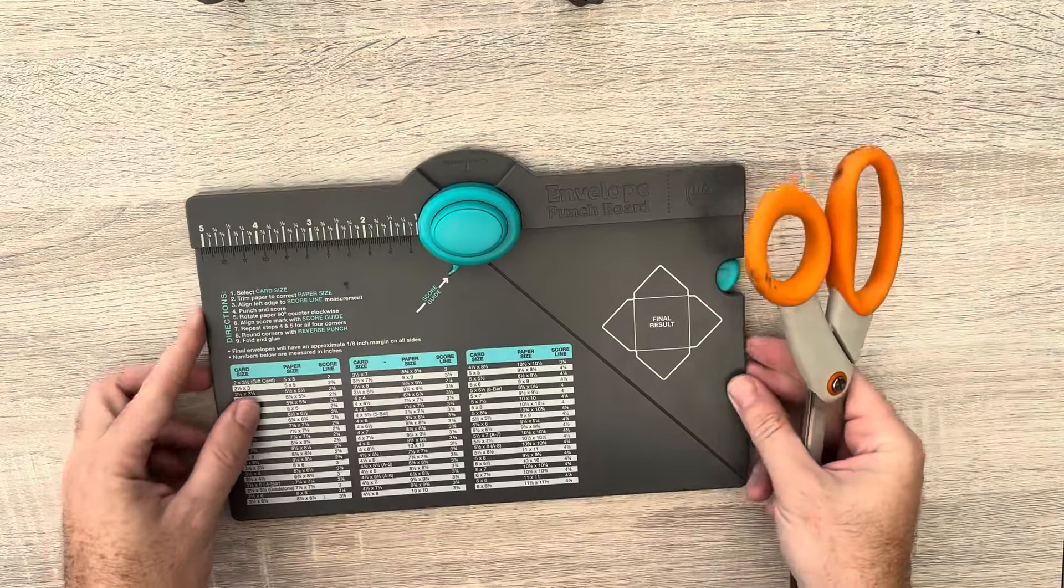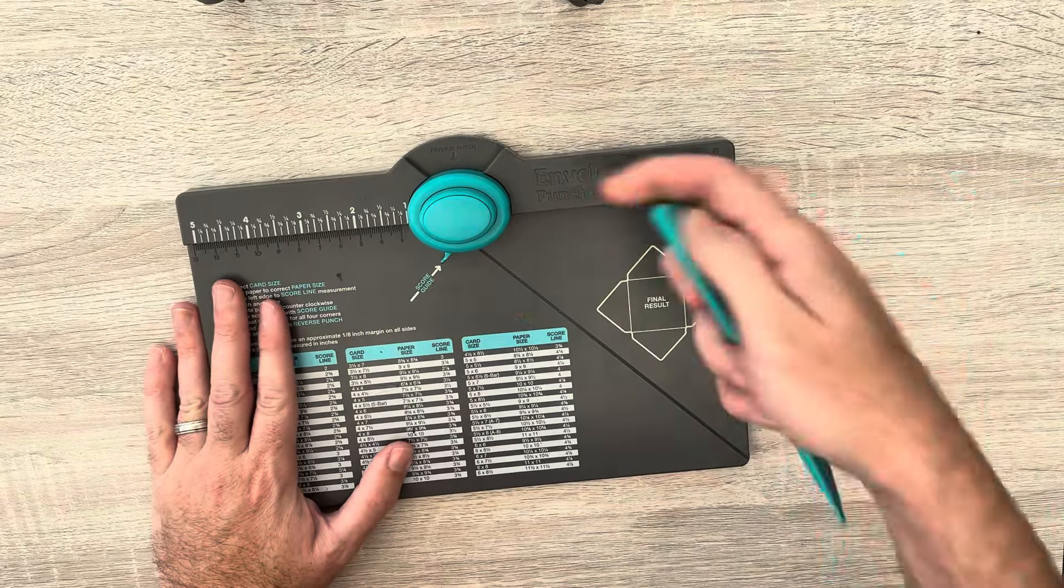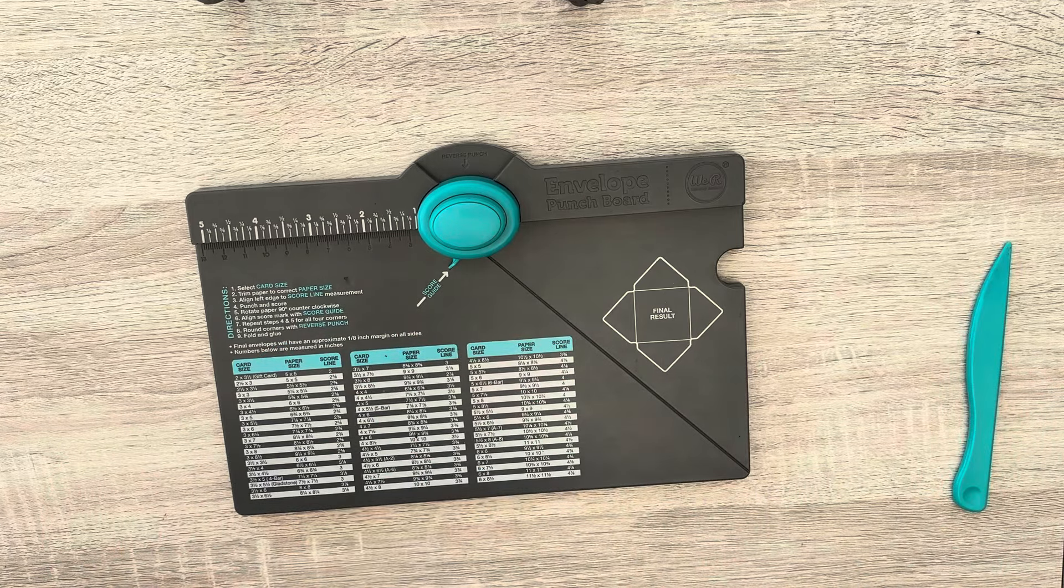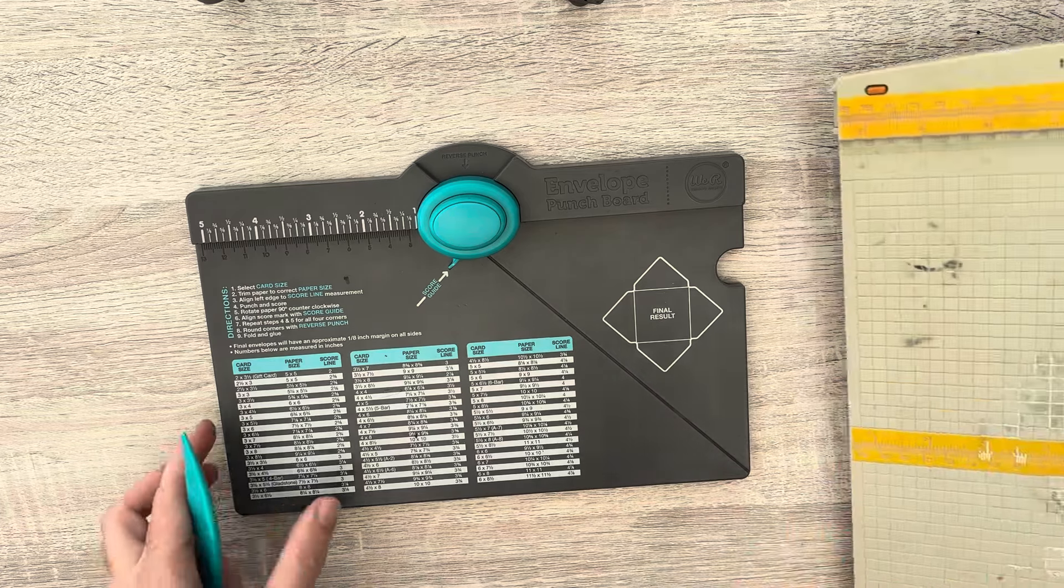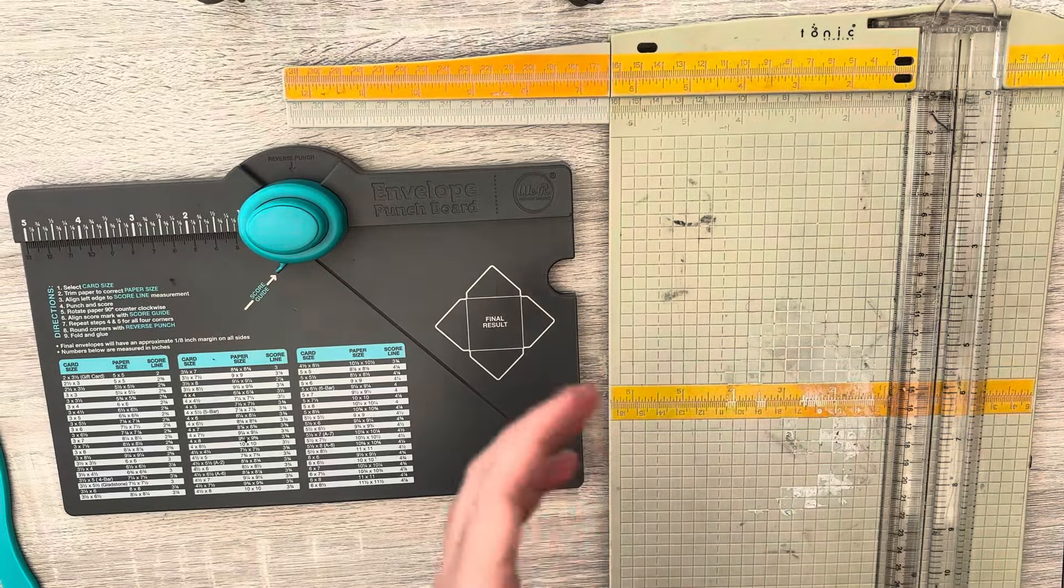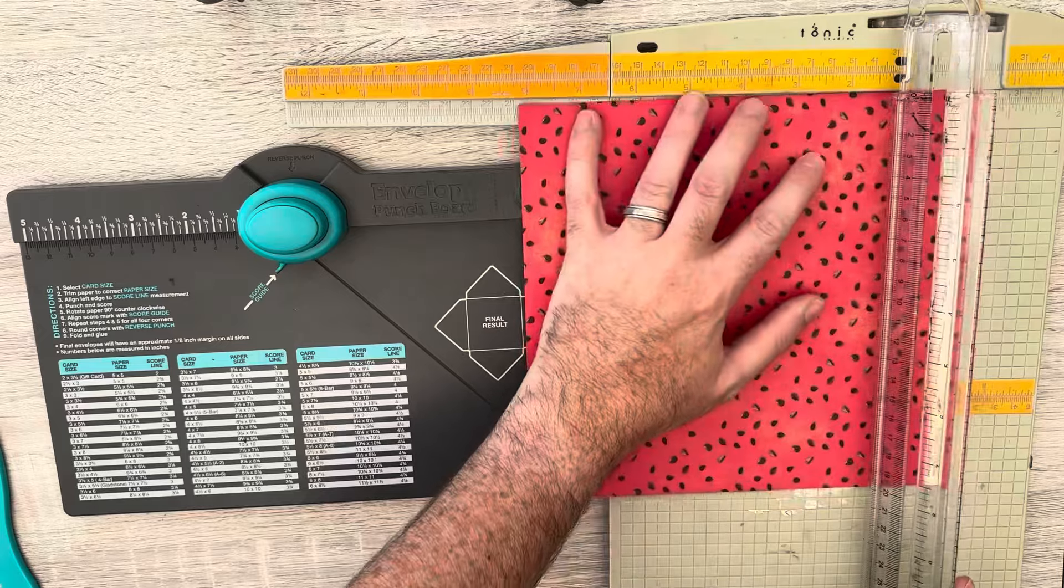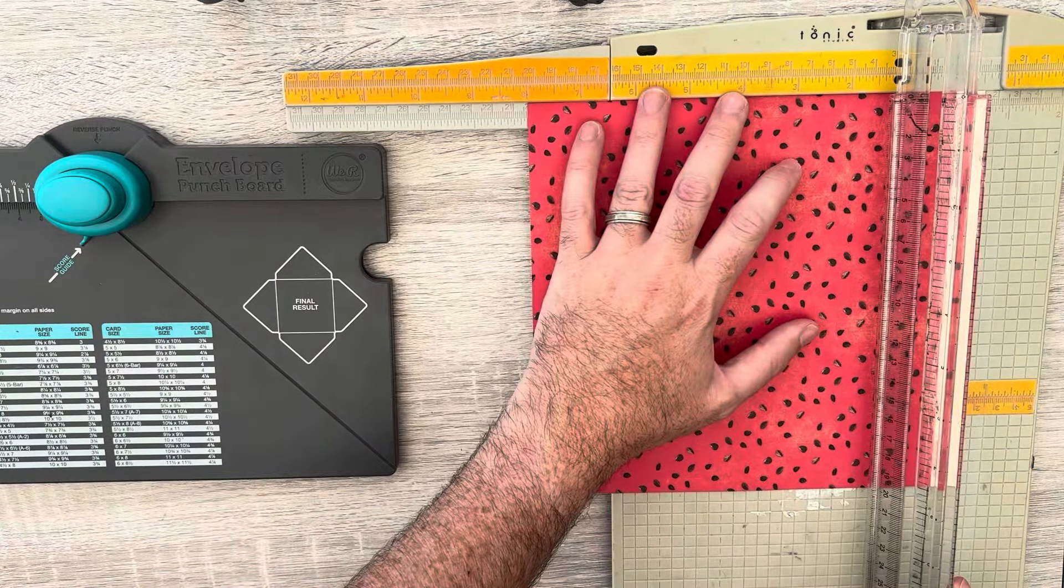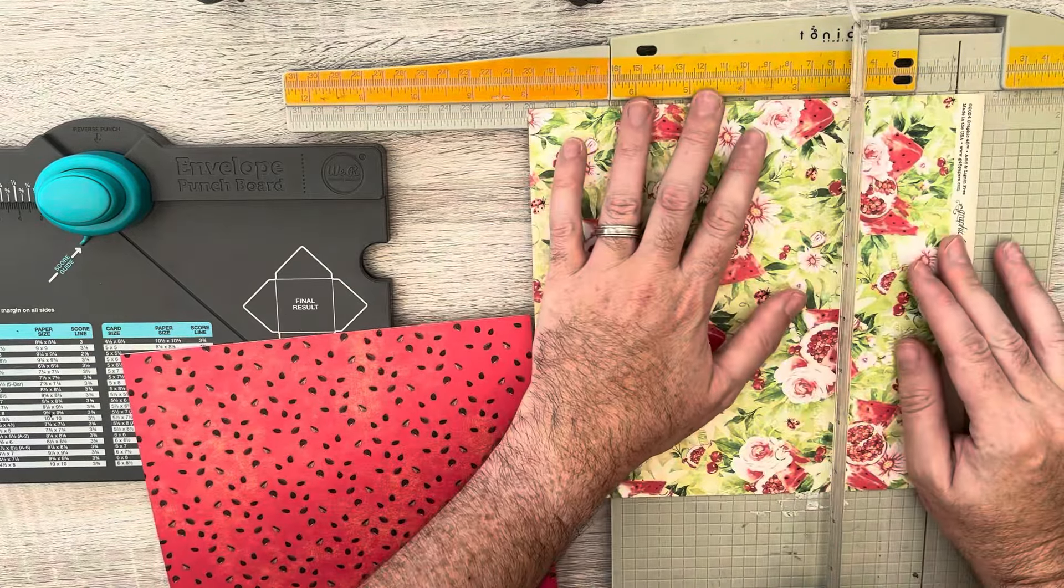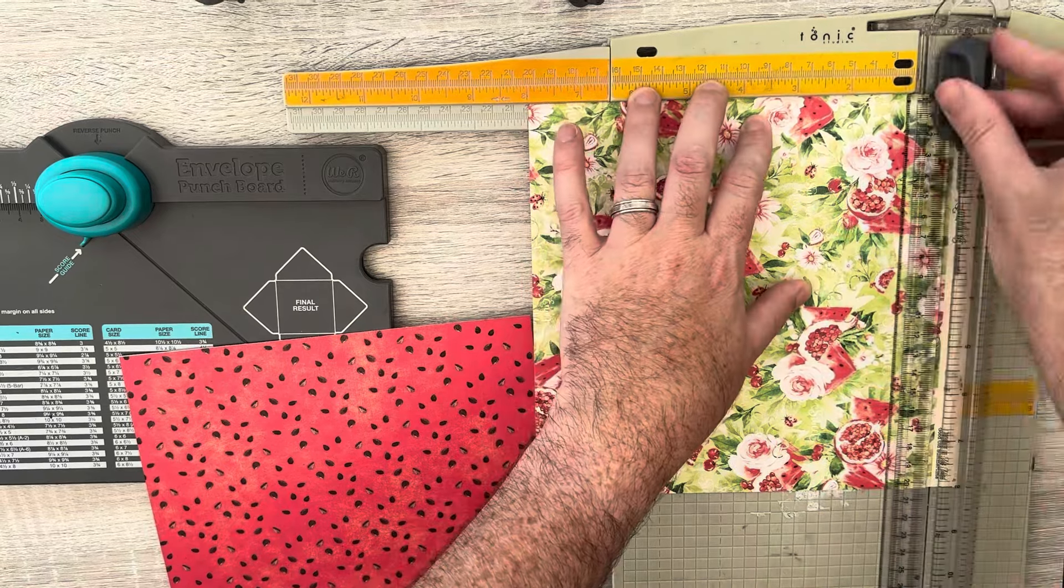So those are my 6x4 photo wallets. So let's go ahead and make a couple. So they're really really easy to make because it's just like making an envelope. So let me just grab my punch board. And it comes with the scoring tool and it comes with a corner rounder. And all the measurements are printed on here as well. So you don't even have to think or go searching for anything.